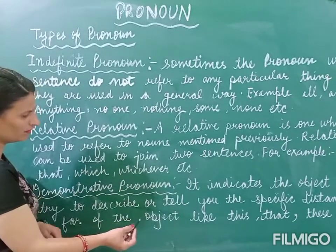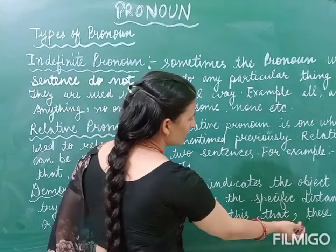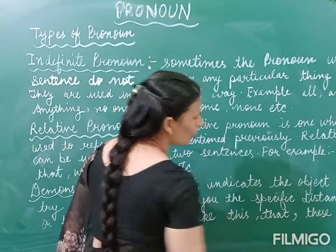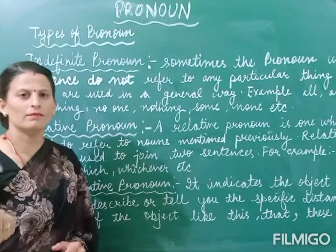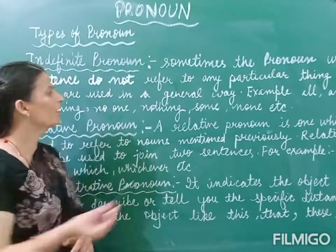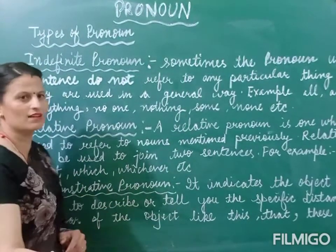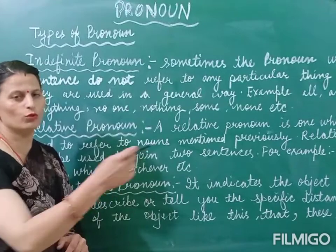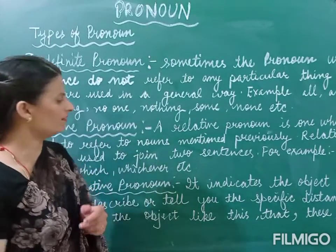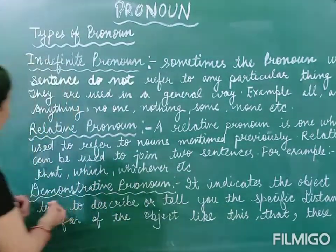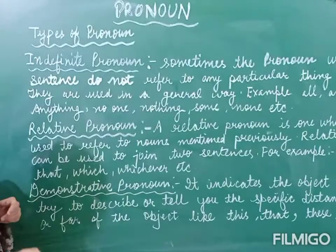Examples of demonstrative pronouns include: this, that, these, those. Sample sentences: 'See this pen.' 'This is a pencil.' 'That is a blackboard.' 'These are children.' 'Those are trees.' These are the words with examples of demonstrative pronouns.